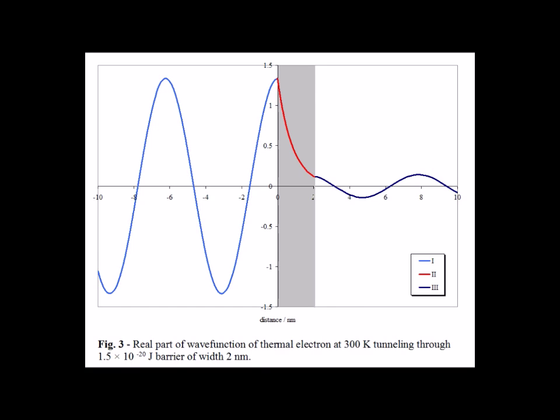In figure 3, again, we have an electron at 300 degrees Kelvin tunneling through a barrier 2 nanometers wide. Note that in this case, the potential is 1.5 times 10 to the minus 20 joules.